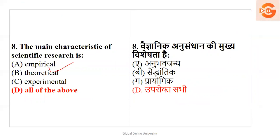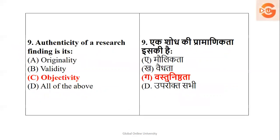Next: the main characteristics of scientific research include being empirical — dealing with real-life situations — theoretical, involving certain theories and principles, and experimental, meaning a certain type of experiment done to reach a main conclusion. All these types are characteristics of scientific research.